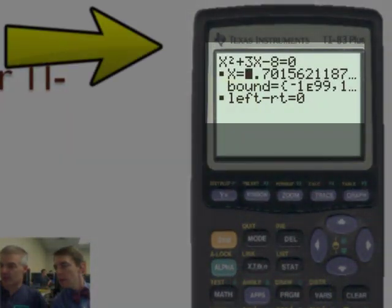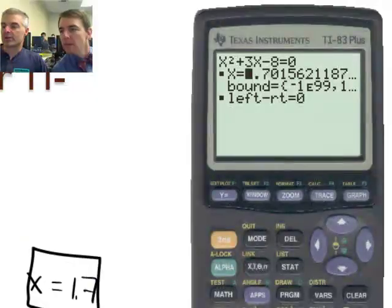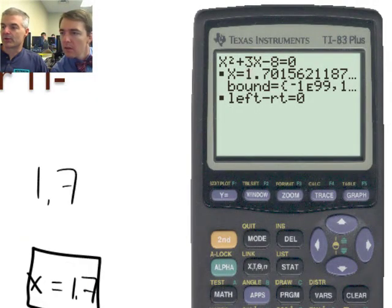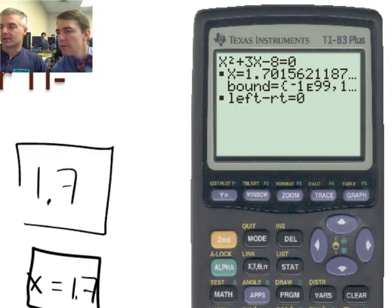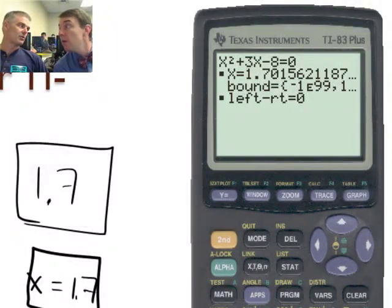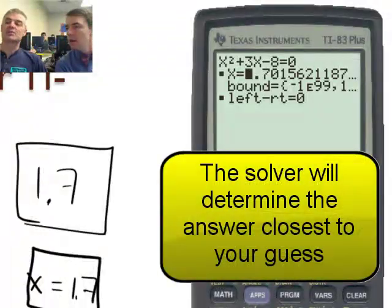So the answer, x is actually equal to 1.7. Now remember guys, if you've done the quadratic formula, there's actually two answers. It's b squared minus 4ac, plus or minus. So this actually only gives you one answer. It's the answer closest to your guess, the guess of 2.